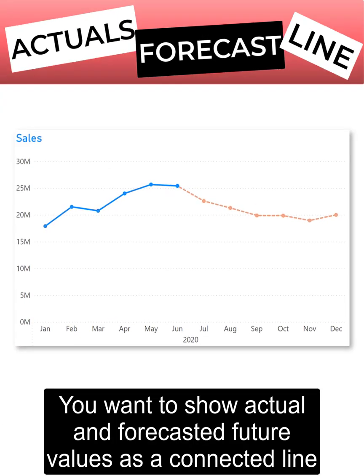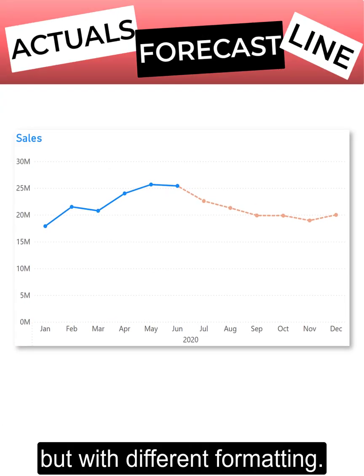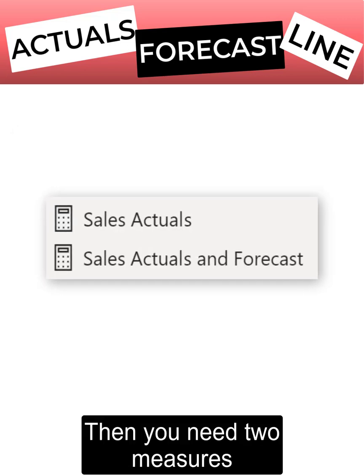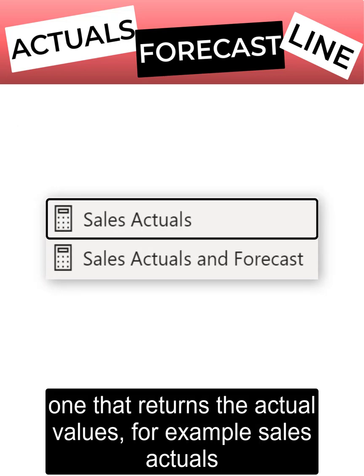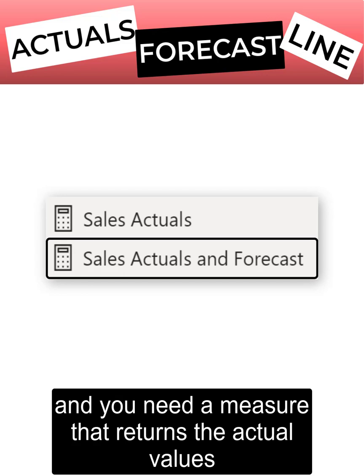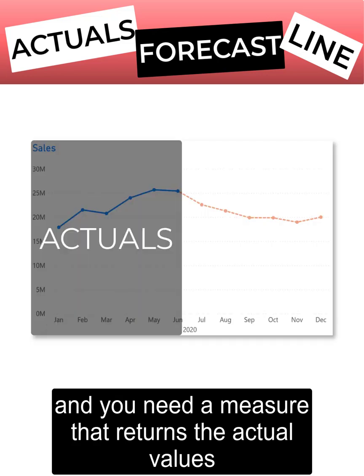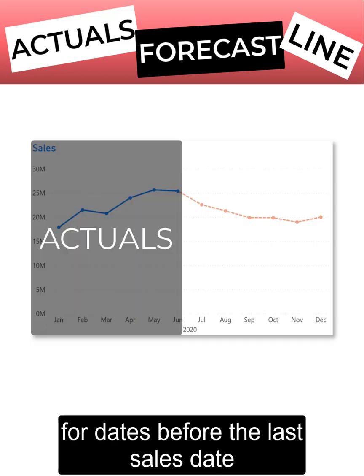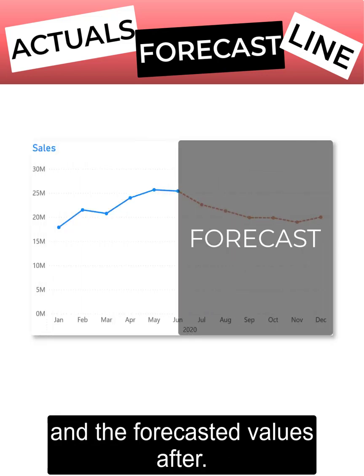You want to show actual and forecasted future values as a connected line, but with different formatting? Then you need two measures: one that returns the actual values — for example sales actuals — and one that returns the actual values for dates before the last sales date and forecasted values after.